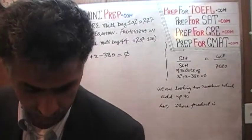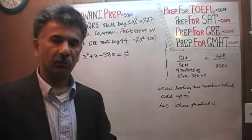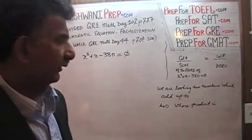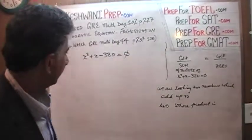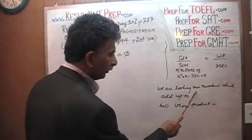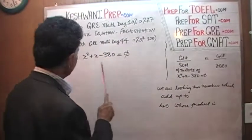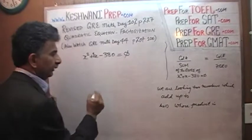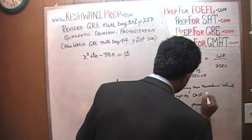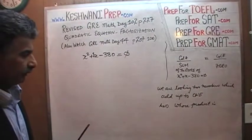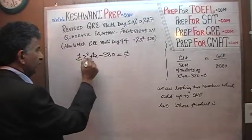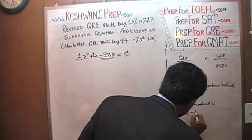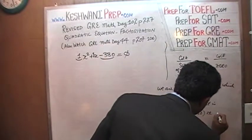How do we go about it? There are two ways. One is to employ what is known as the quadratic formula. Another method is to use what is known as factorization. We are going to use the factorization method. In the factorization method, we look for two numbers which add up to the coefficient of the middle term. The coefficient of the middle term here is 1. So they have to add up to 1, and their product has to equal 1 times negative 380, or simply negative 380.